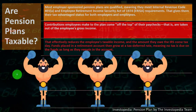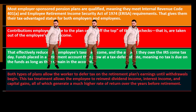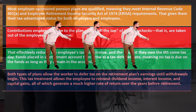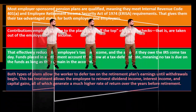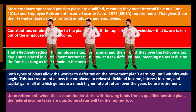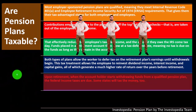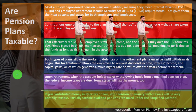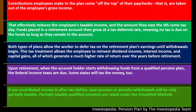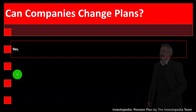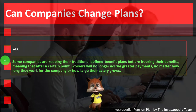Upon retirement, when the account holder starts withdrawing funds, federal income taxes are due, and some states will tax the money too. If contributions were made in after-tax dollars, withdrawals will be only partially taxable. Can companies change plans? Yes — some companies are keeping their traditional defined benefit plans but freezing benefits, meaning workers will no longer accrue greater payments no matter how long they stay or how their salary grows.